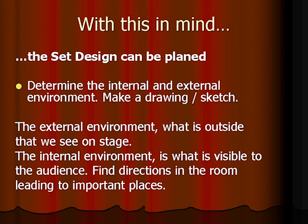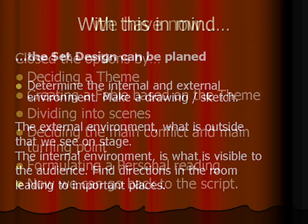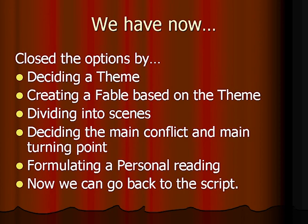So, what we have done in this episode: we have closed the options. By deciding a theme, we have created the fable based on the theme. We have divided the script and the fable into scenes. We have decided the main conflict and main turning points. And we have formulated a personal reading. Now it's time to go back to the script. That is the end of this second episode of Staging the Text — How to Analyze. Thank you!